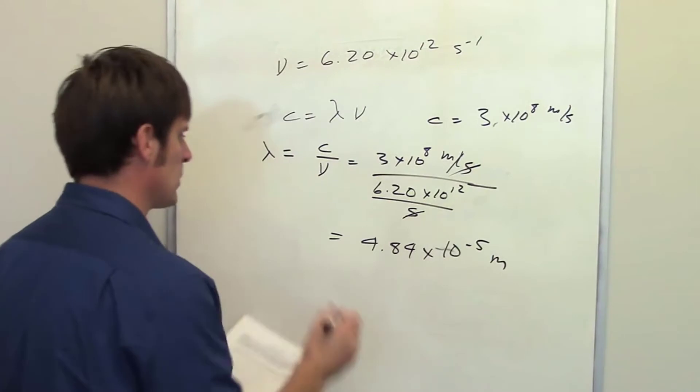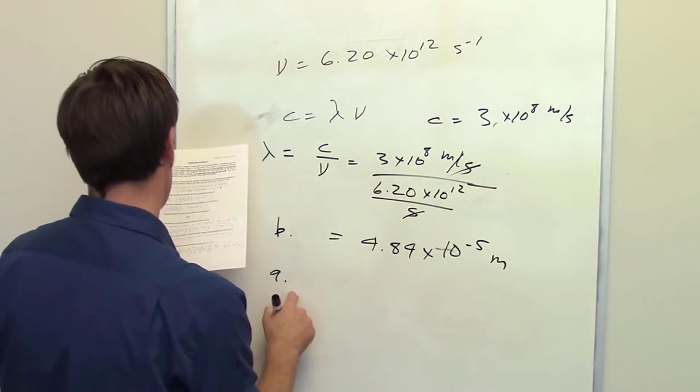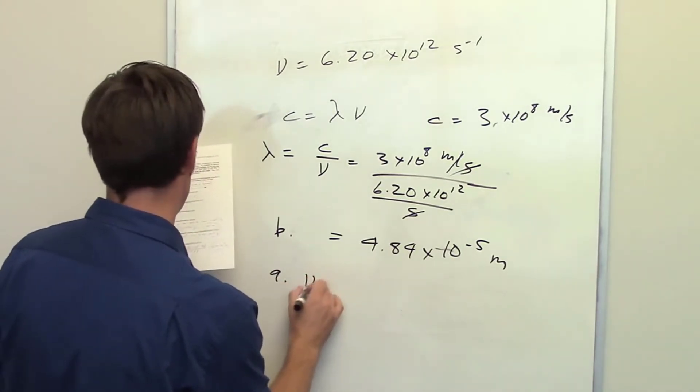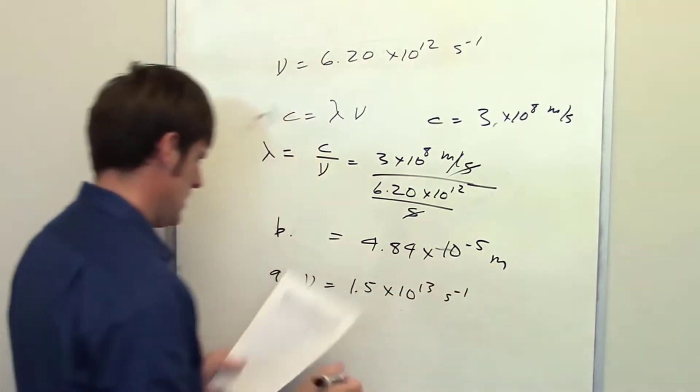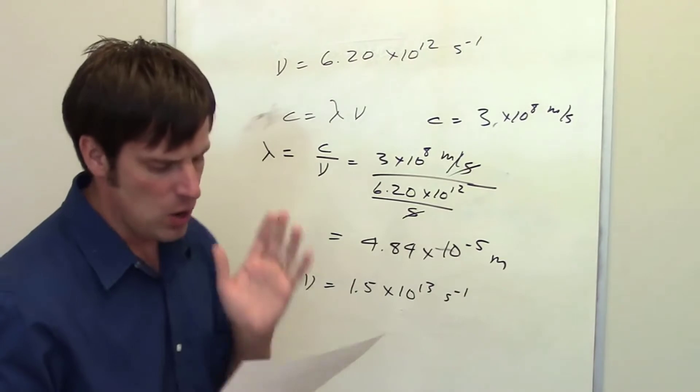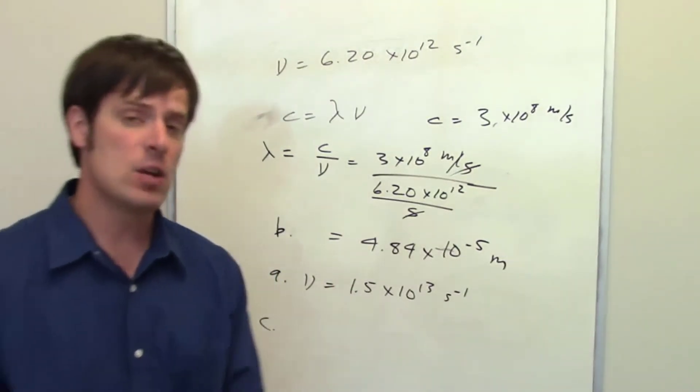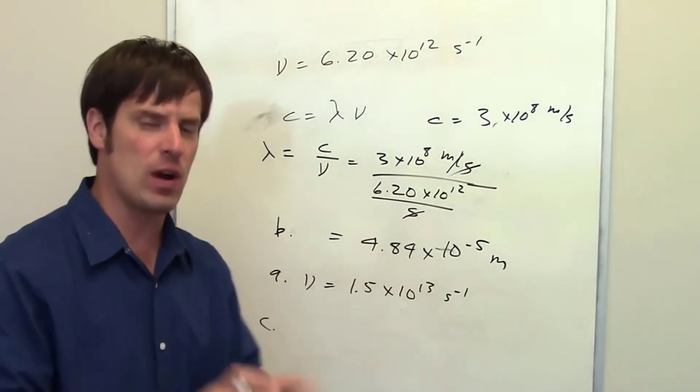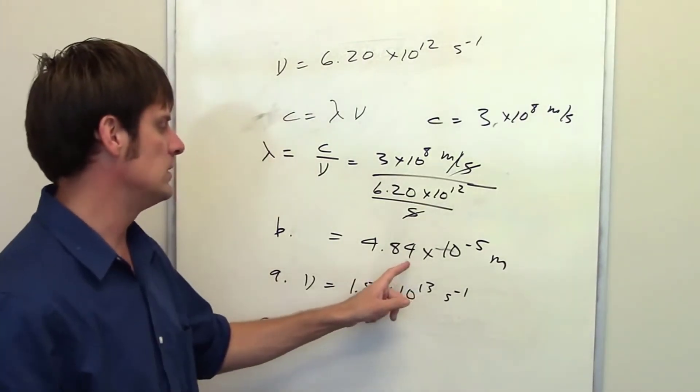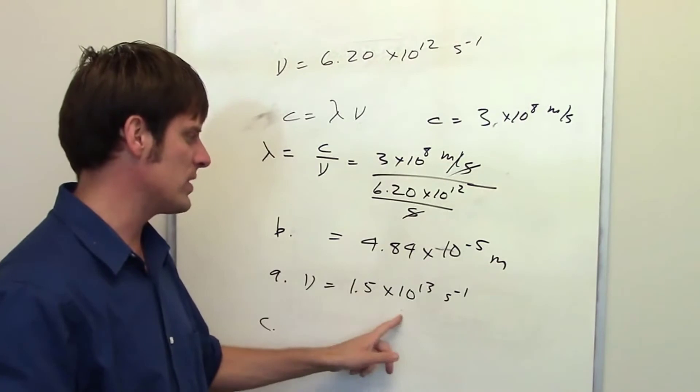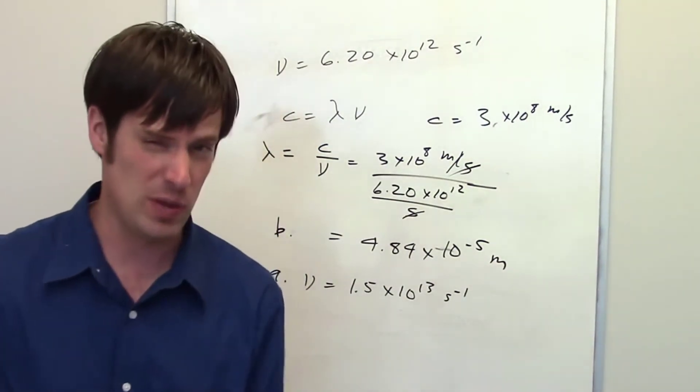You might remember from our previous question, this was the answer to option B. In our previous question, answer A, we determined the frequency to be equal to 1.5 times 10 to the 13th inverse seconds. And question C from this problem set asked us, would the radiations in parts A and B be visible to the human eye? In order to determine that, you need to look at the figure of the electromagnetic or EM spectrum and determine if a form of EM radiation having this wavelength or this frequency lies in that narrow band of visible light. I'll let you do that on your own.